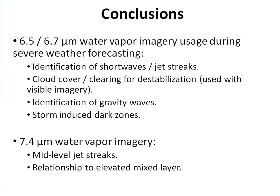For conclusions: we used the water vapor imagery during severe weather forecasting to identify short waves and jet streaks, assess cloud coverage for destabilization using it with visible and IR imagery, identify gravity waves, and look at the storm-induced dark zone signature. We utilized the 7.4 micron imagery available on the GOES Sounder to analyze mid-level jet streaks and also look at the relationship to the elevated mixed layer.